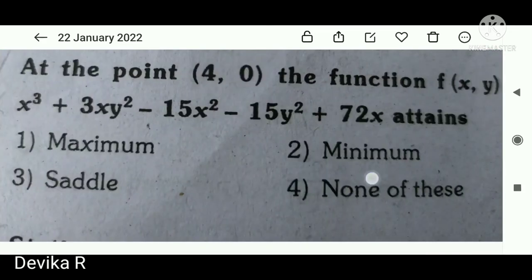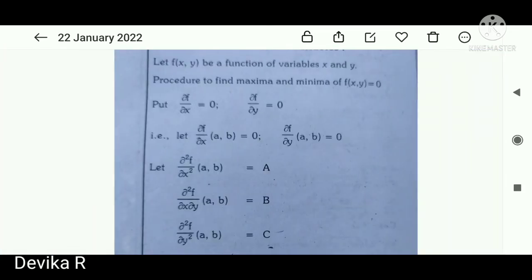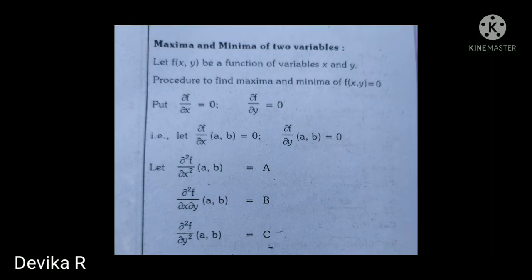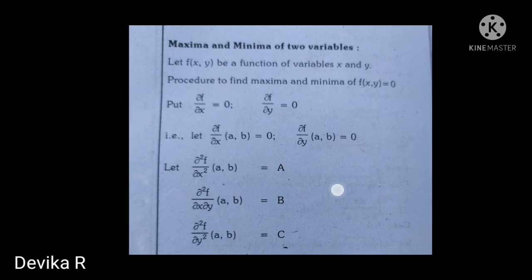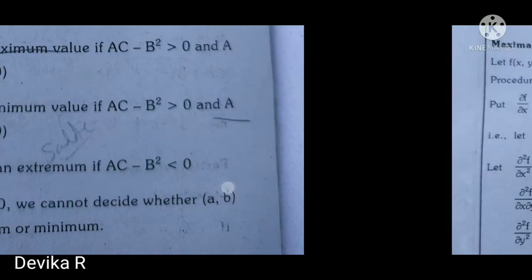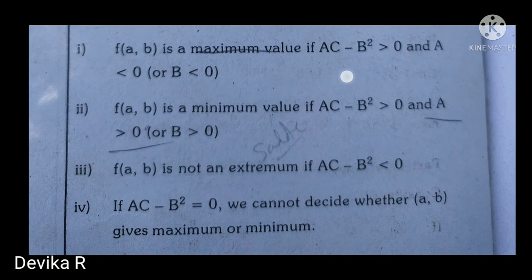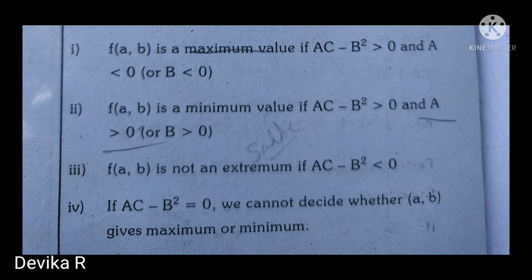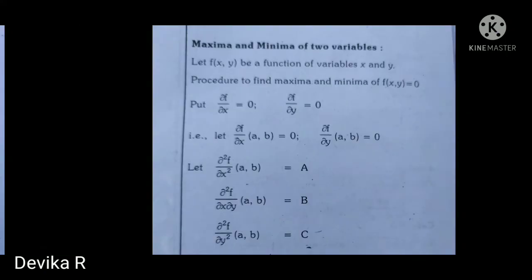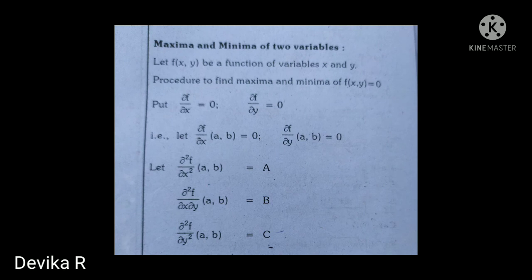Let's revise once again. The procedure for maxima minima of two variables: find ∂f/∂x = 0 and ∂f/∂y = 0, then compute the second-order derivatives at point (a, b) to form A, B, C values, find AC − B², compare all the values, and determine the answer. Friends, if you have any doubt please write it in the comments below. Thank you so much for your valuable time!